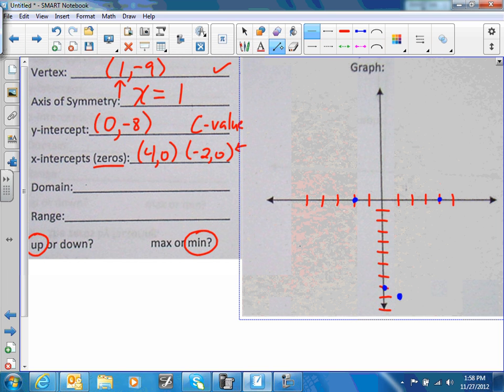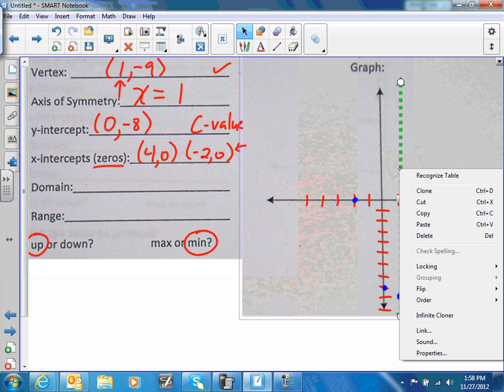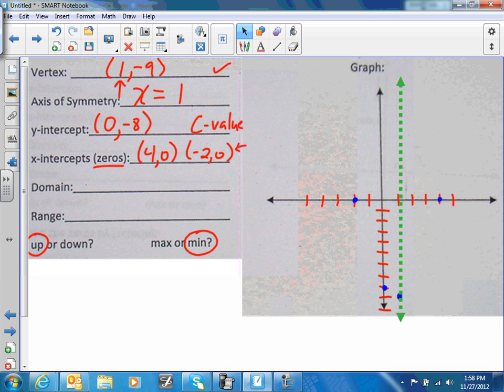One of the things you need to realize is that there's an axis of symmetry. Notice your axis of symmetry goes right through your vertex. I'm going to adjust this a little bit. There we go.